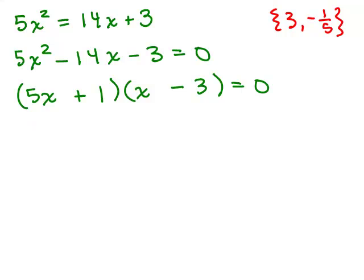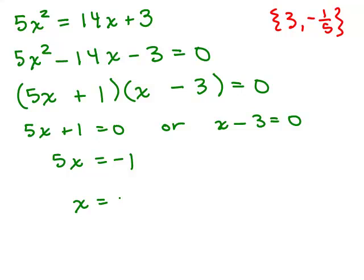Then we would set each factor equal to 0 and solve. Notice we still get x = -1/5 and x = 3. For this particular problem, we could have found the solutions this way as well.